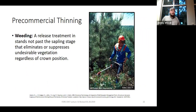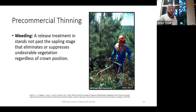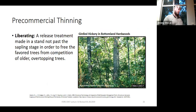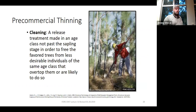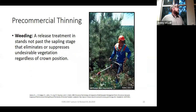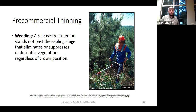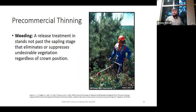The last pre-commercial option is weeding. Again, a release treatment in a stand not past the sapling stage, but here you're eliminating suppressed undesirable vegetation regardless of crown position. The first two definitions remove overtopping trees based on crown position. With weeding, crown position doesn't matter—you just cut on a spacing, like 'leave me one good tree every ten feet by ten feet.' Here's an example of the brush saw: a couple of handles with a harness and a circular saw blade at the end of a stick.